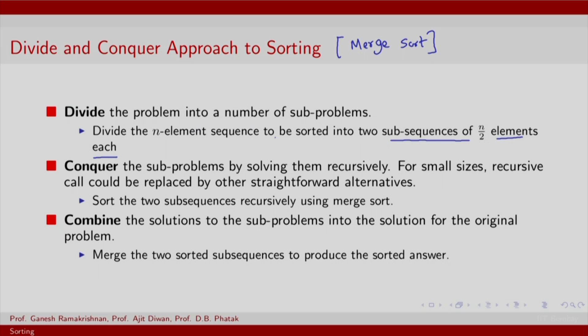Conquer is to solve each of these sub-problems recursively. So this will mean sort the two sub-sequences recursively using merge sort. Merge sort, a divide and conquer based sort, has to be invoked on each part. Finally, combine is to go all the way up by merging the two sorted sub-sequences to produce a sorted answer. Remember that combine will be invoked recursively in recursive calls to conquer.